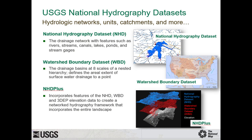The National Hydrography Dataset, or NHD, is a digital geospatial dataset that includes the surface water features within the United States. It is one of three hydrographic dataset components of the National Map. NHD is closely related to the Watershed Boundary Dataset and the NHD Plus layer, but this lesson will focus on the background, content, and access to NHD. The other hydrographic datasets have their own lessons: Lesson 15A covers the Watershed Boundary Dataset, and Lesson 15B covers NHD Plus.